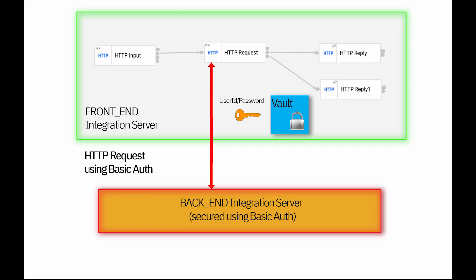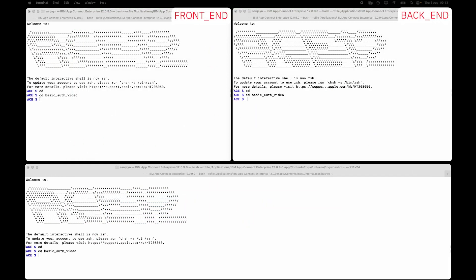The backend requires a user ID and password for an API call. The frontend integration server will act as a client. I'll create a simple ACE message flow, deploy it to the frontend integration server, and send a message through the flow so that it sends the request to the backend web service using BASIC-AUTH. First, I'm going to create the integration servers.